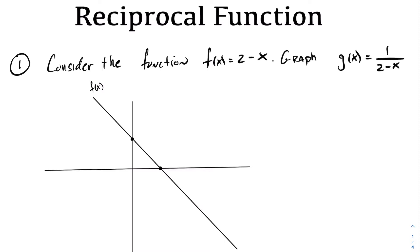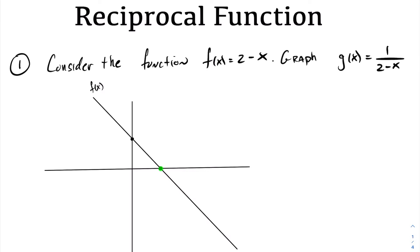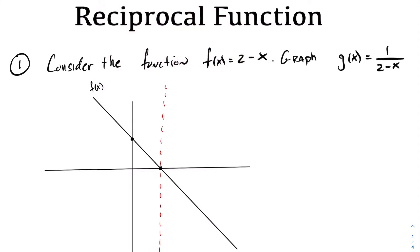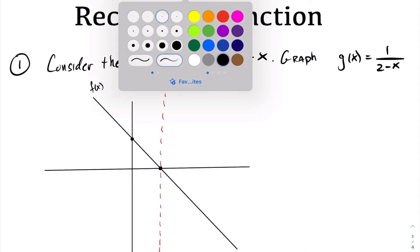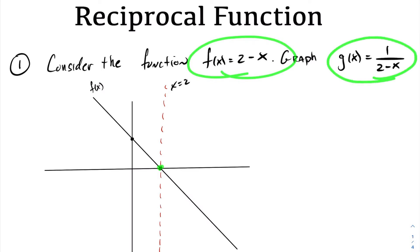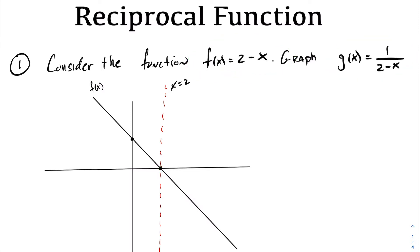If you go to analyze the graph of 1 over 2 minus x, what was once a root now becomes a point of discontinuity, also known as a vertical asymptote. We generally draw a vertical asymptote as a dashed vertical line. In this case, the vertical asymptote exists at x equals 2. So the function has a root at 2, and its reciprocal function has a point of discontinuity and a vertical asymptote at 2.